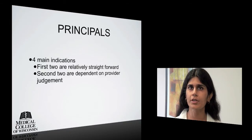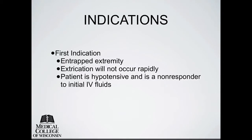There are four main indications for field amputation. The first two are relatively straightforward, and the second two are dependent on provider judgment. The first indication involves an entrapped extremity where extrication will not occur rapidly, the patient is hemodynamically abnormal — hypotensive — and is a non-responder to initial IV fluids. According to ATLS, a trauma patient is described as a responder or non-responder. A responder is hypotensive and/or tachycardic and responds to a two-liter fluid challenge, with hemodynamics returning to normal. A transient responder initially responds but then becomes hypotensive and/or tachycardic, requiring colloid administration — usually blood — and potentially surgical intervention. The non-responder's vital signs remain abnormal despite two liters of crystalloid and blood products, and these patients need their bleeding controlled immediately.